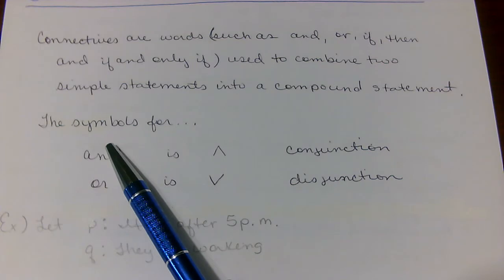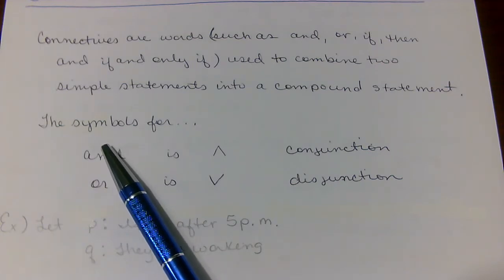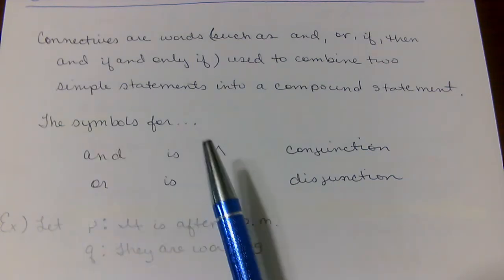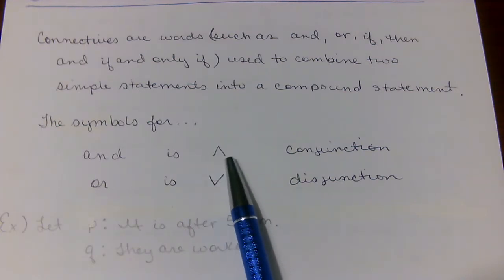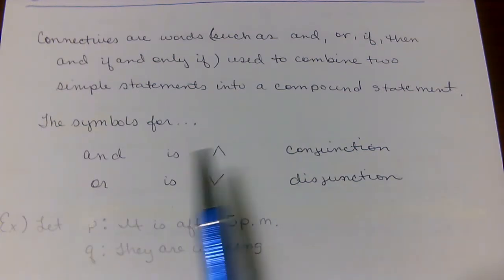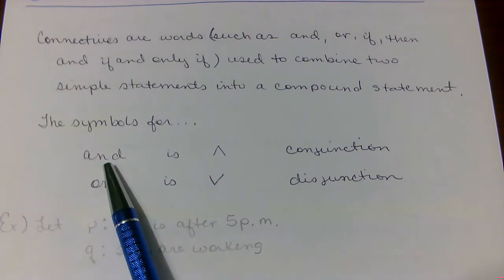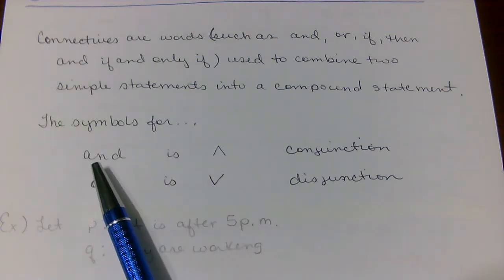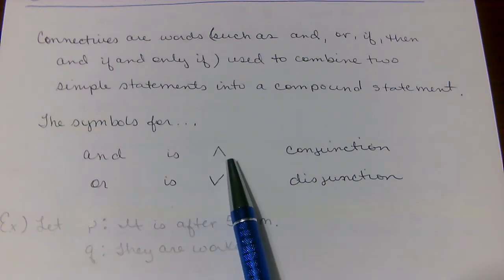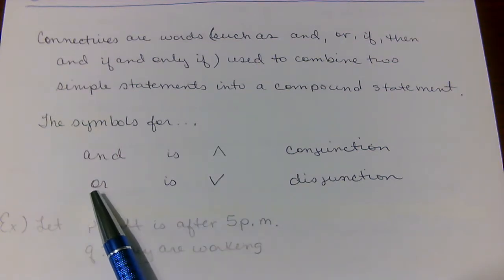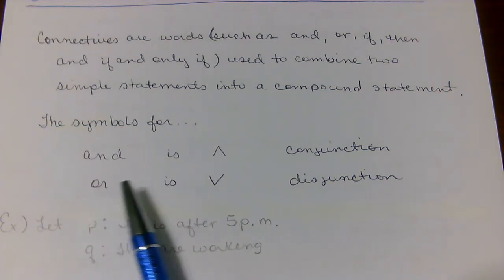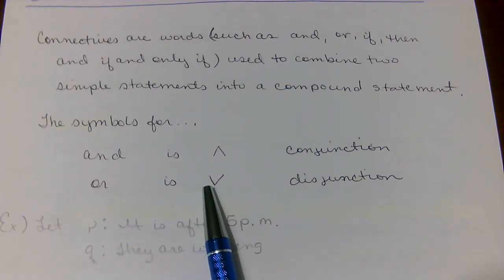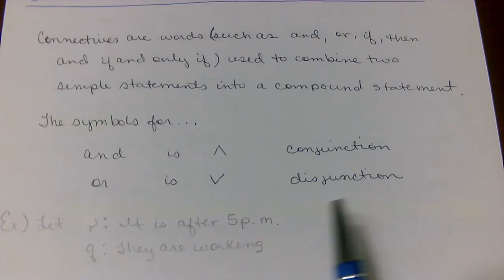When we're translating our statements into symbols, we're going to use this symbol as a conjunction for the word 'and.' This means 'and.' The way that I like to remember this is this and goes in this direction. The disjunction is going to be 'or,' and we represent it with the V symbol.